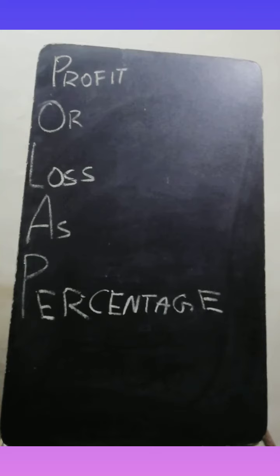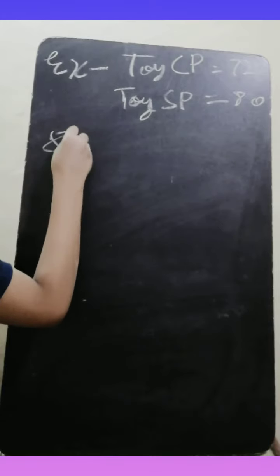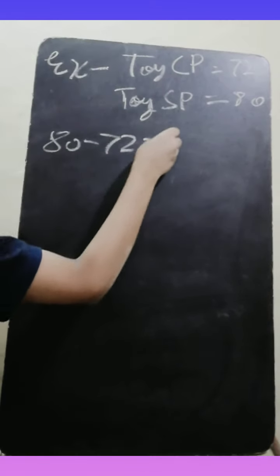We have to find the profit percent. The formula for profit percent is profit divided by CP, multiplied by 100.